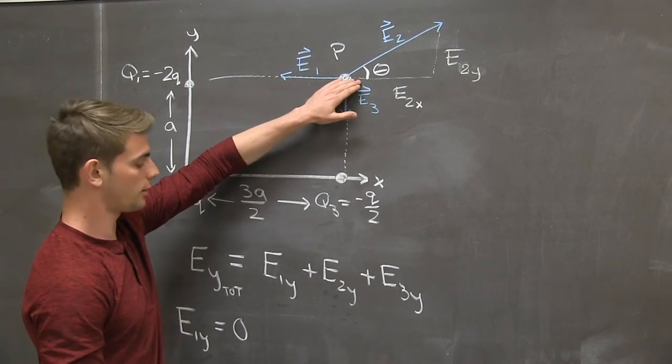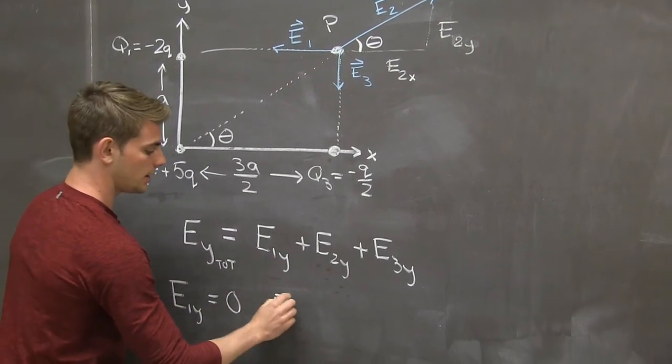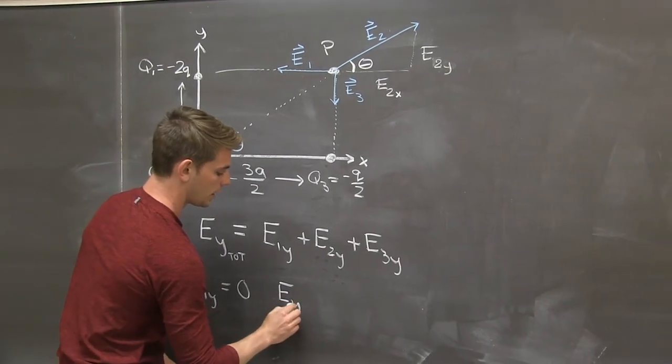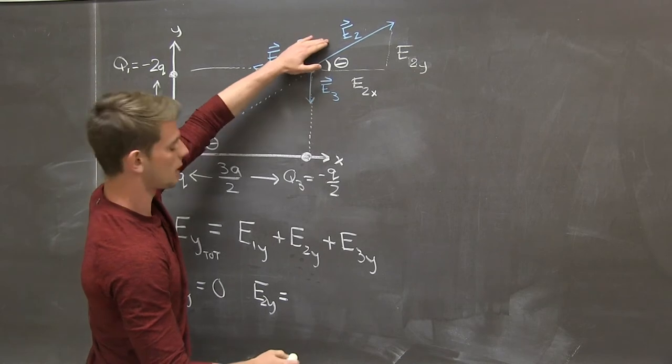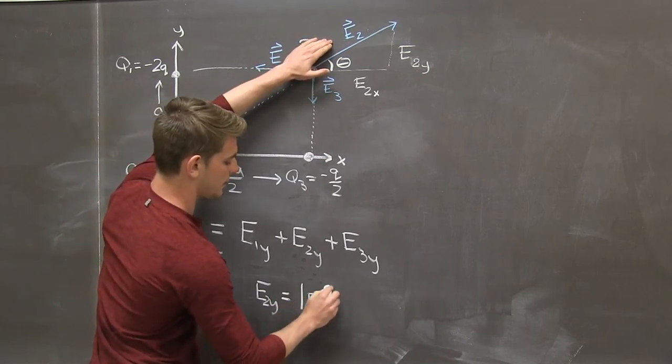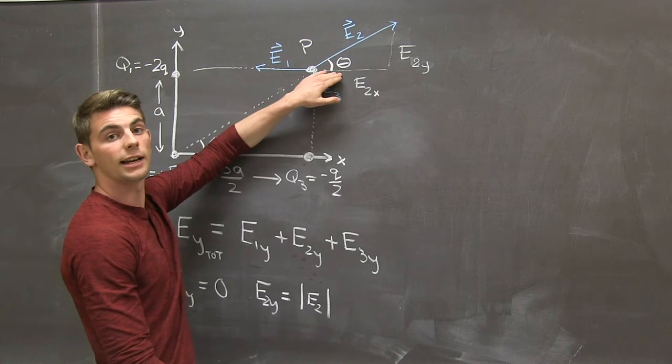Now, using geometry, we know that e2 in the y direction has to be equal to the magnitude of e2 times sine of that angle theta.